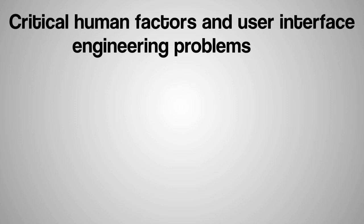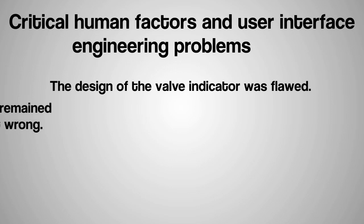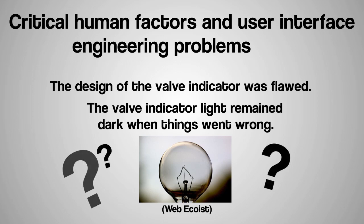The design of the valve indicator light was fundamentally flawed — it implied the valve was shut when the light went dark. When everything was operating correctly this was true, and operators became accustomed to relying on it. However, when things went wrong and the main relief valve stuck open, the unlighted lamp was actually misleading operators by implying the valve was shut. The light was programmed to go off once the computer sent the signal to close the valve, which is not the same as the valve actually being closed. The operators had not been trained to understand the ambiguous nature of the valve indicator or look for alternative confirmation that the main relief valve was closed.